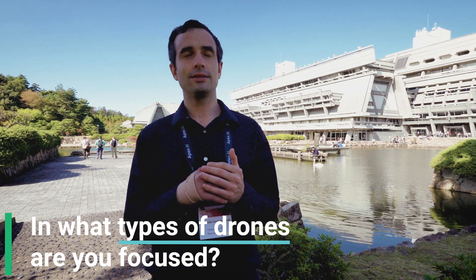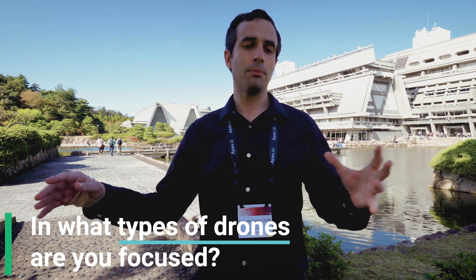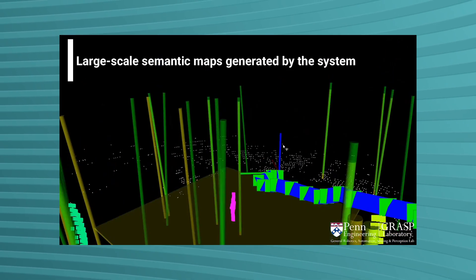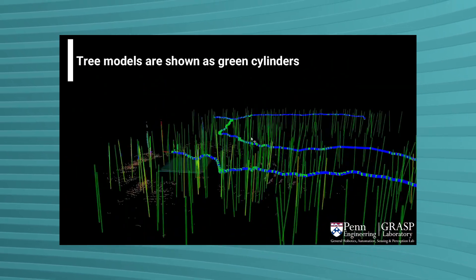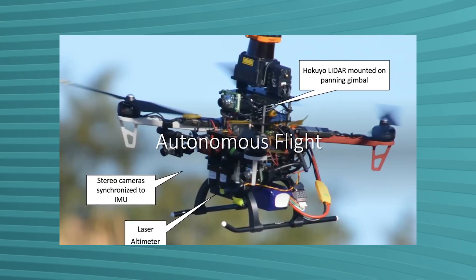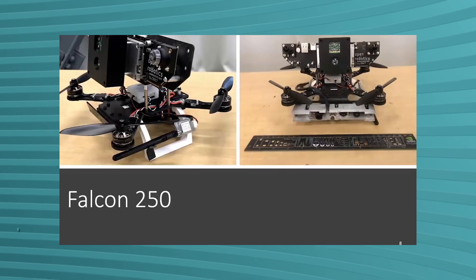Some of our research uses high altitude UAVs that we use to map areas and create semantic maps — aerial semantic maps of these areas. We also use PIX4 for those UAVs. Those are GPS drones, so we use the full position control provided by PIX4 and we create missions with QGroundControl for our UAVs to follow.